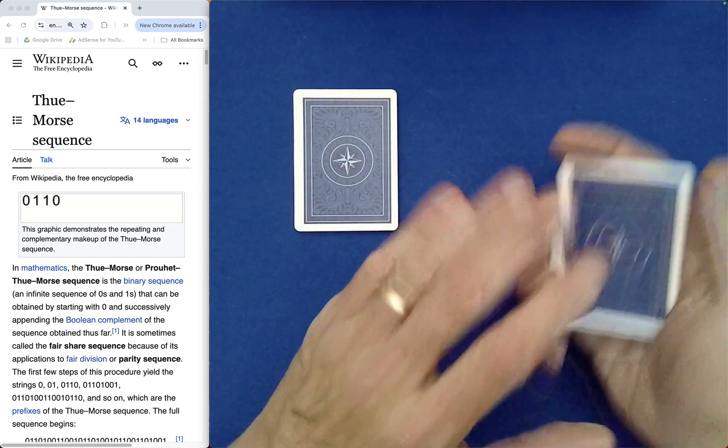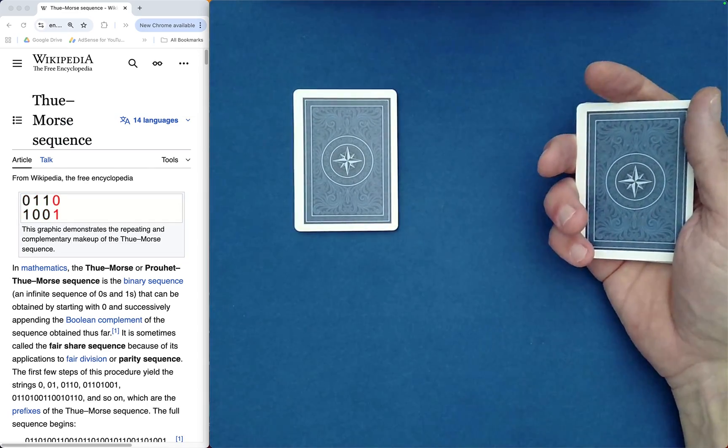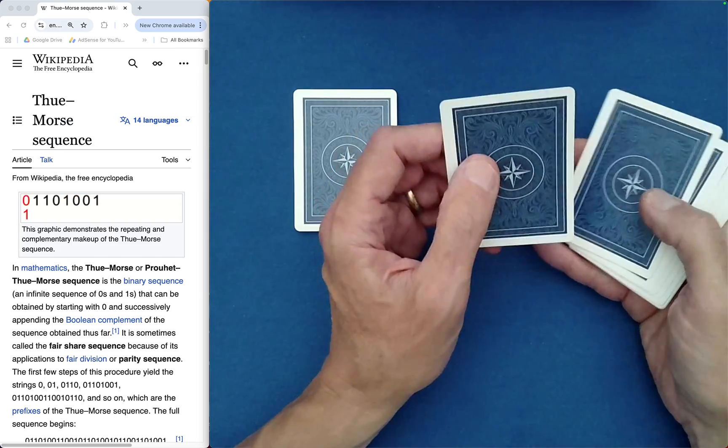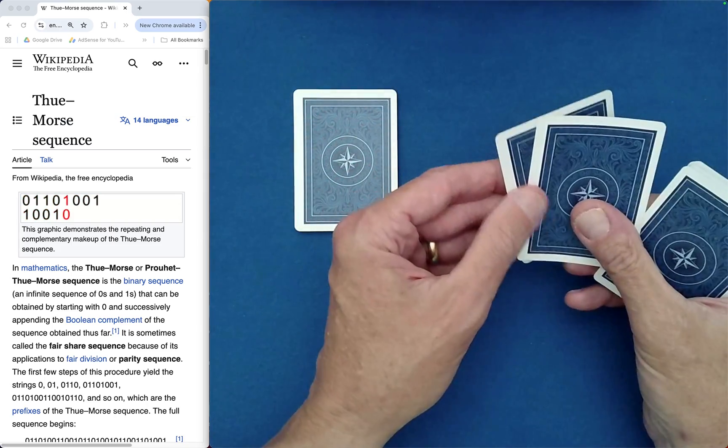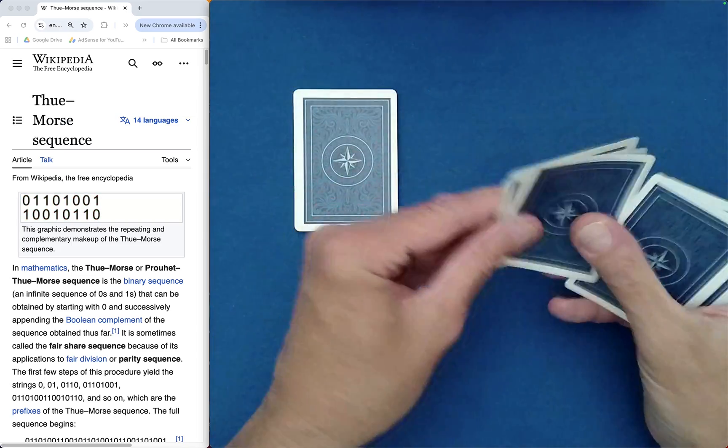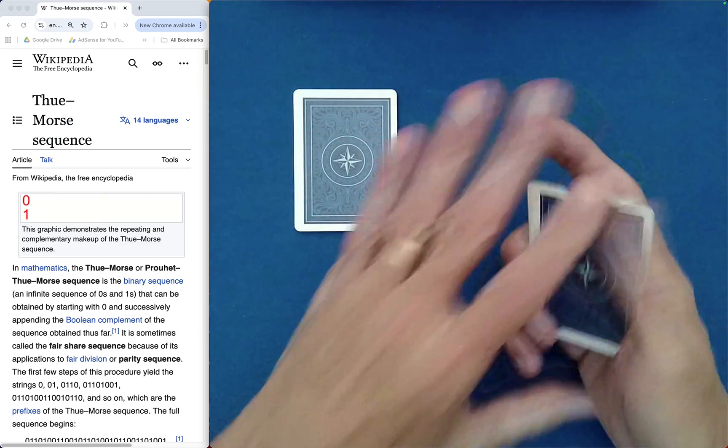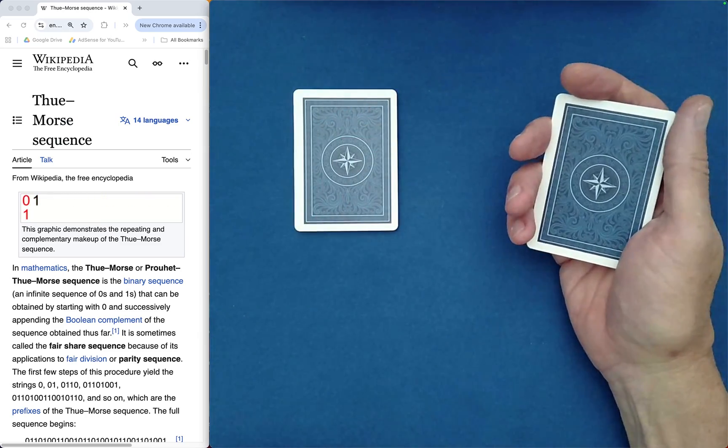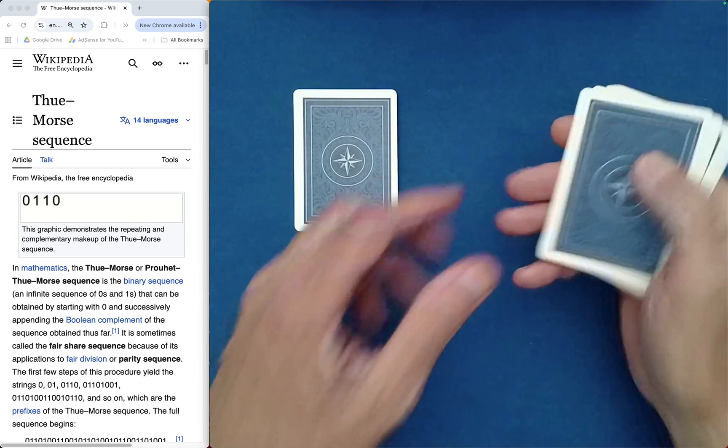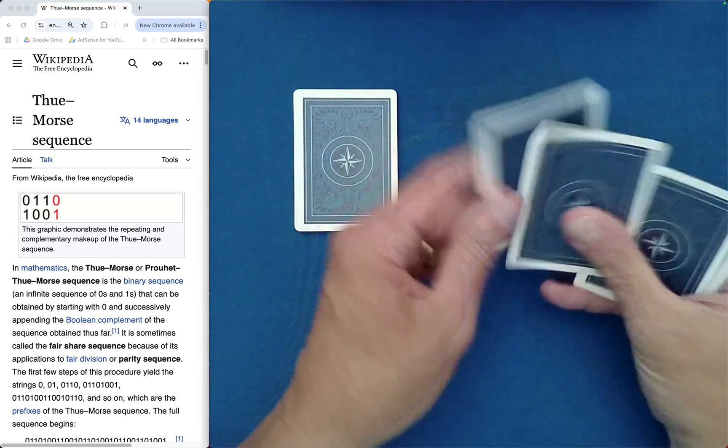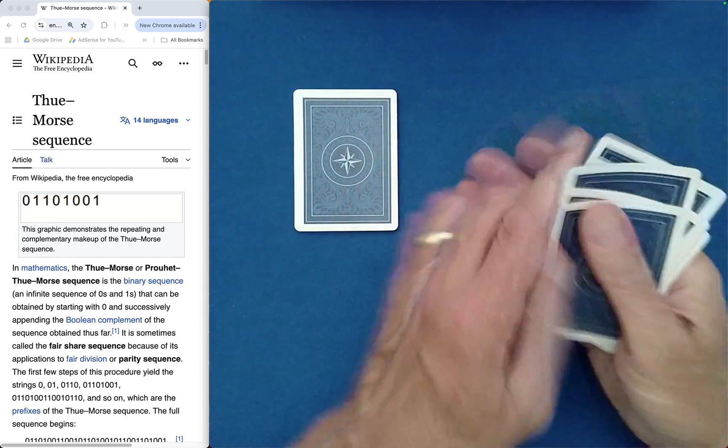Now for this one here, why don't we mix it completely differently? What I'm going to do is I'm going to do the mange over, under, over, under, over, under, over. How many more of those would you like me to perform? Just one more. Over, under, over, under, over, under, over.